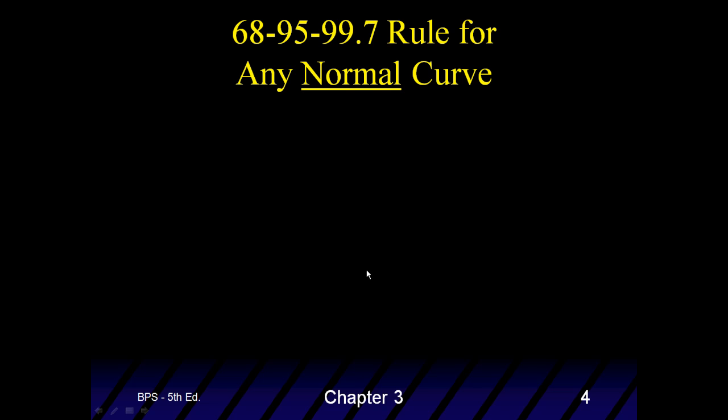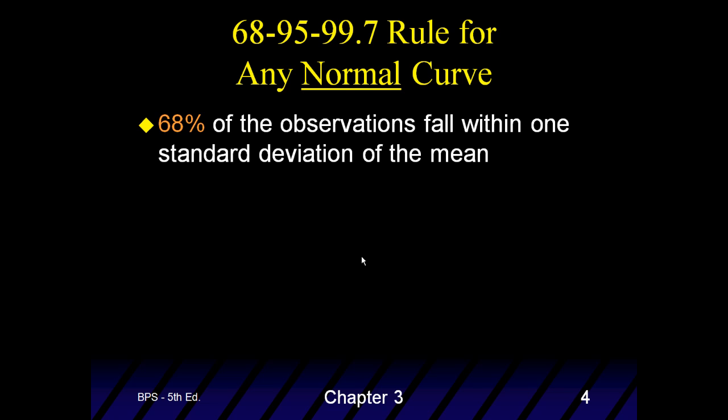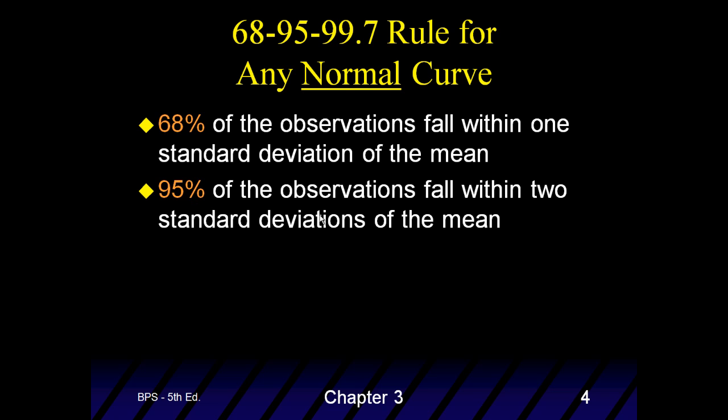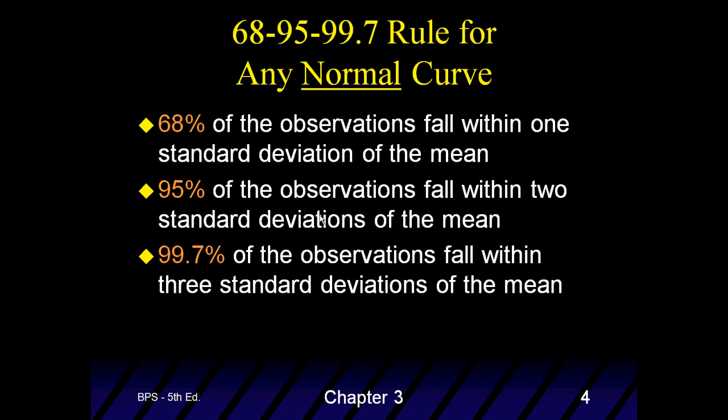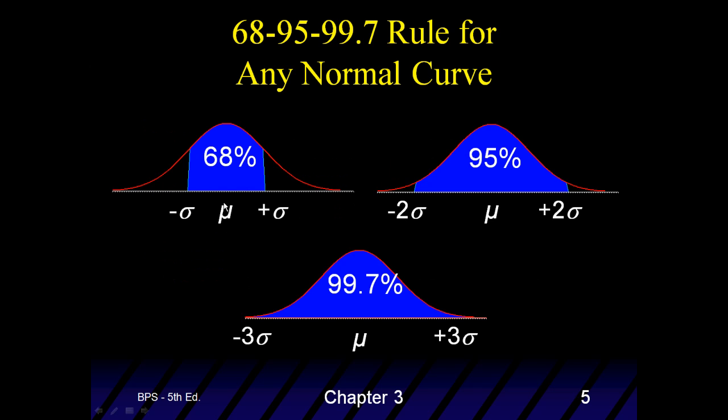There's a 68, 95, 99.7 rule for any normal curve, any. That means your height, your weight, the SAT scores, IQ, and so on. So, 68% of the observations fall within one standard deviation of the mean. 95, 2, 99.7, 3. What does that mean? It means that here's the mean and here's the standard deviation. So, 68% of your data fall in here. So, 68% of the IQs in America fall in this way. 95 fall between two standard deviations on each side. And 3, 99.7.